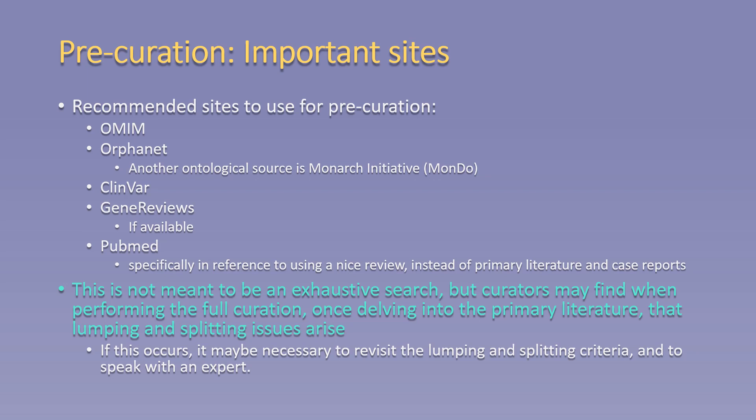ClinVar is a great resource for review of variants associated with the gene of interest and can support, in some cases, delineation of the disease entities in question through the search mechanism on the site. Gene Reviews may also be helpful if there is one written on your gene of interest. PubMed can also be used, but in this initial stage, it is encouraged to look for reviews on the gene of interest to help with the assessment of the most appropriate disease entity rather than individual case reports.